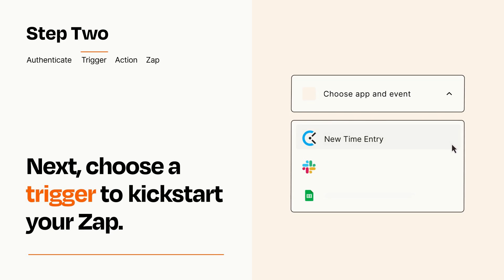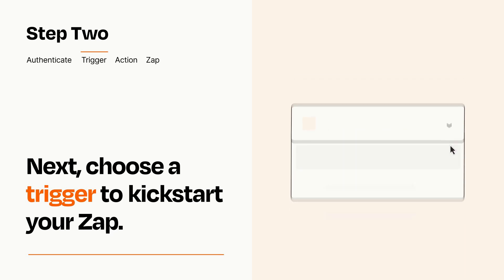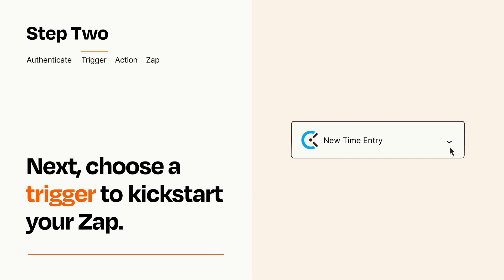Now let's set up your trigger, which is the event that starts your Zap. Pick the trigger event that you want from the list. When you set up this step, your Zap will pull in test data from your trigger app that you'll see later when setting up your action app.